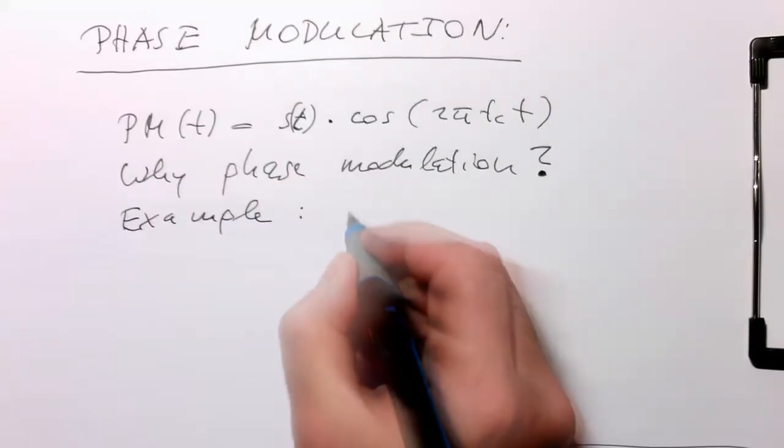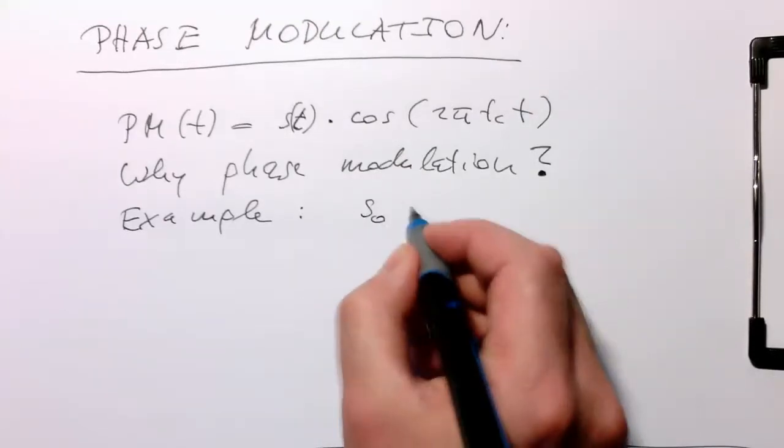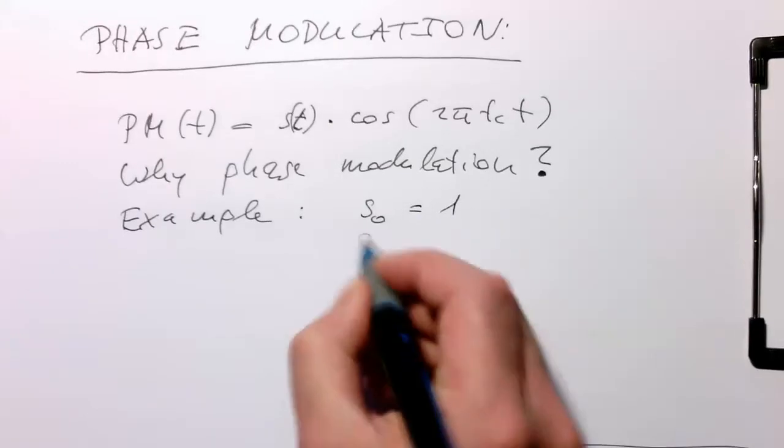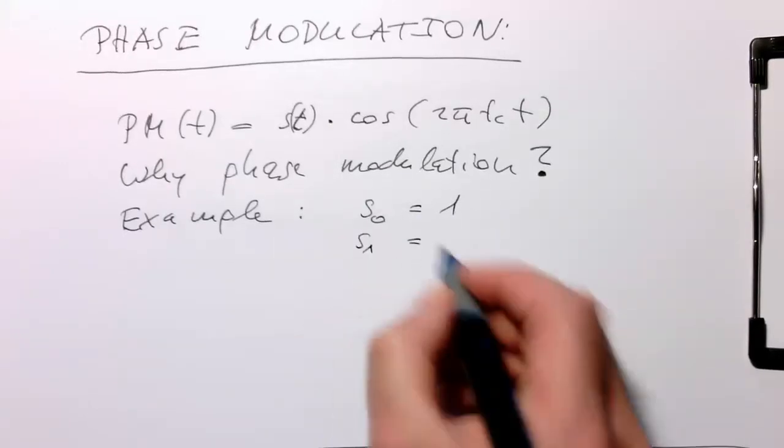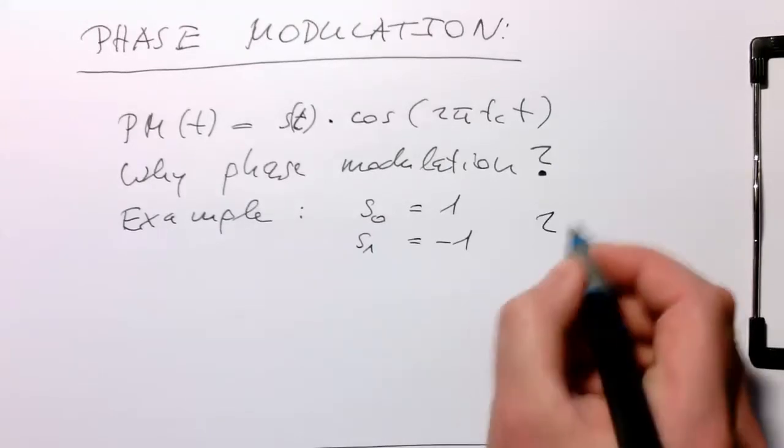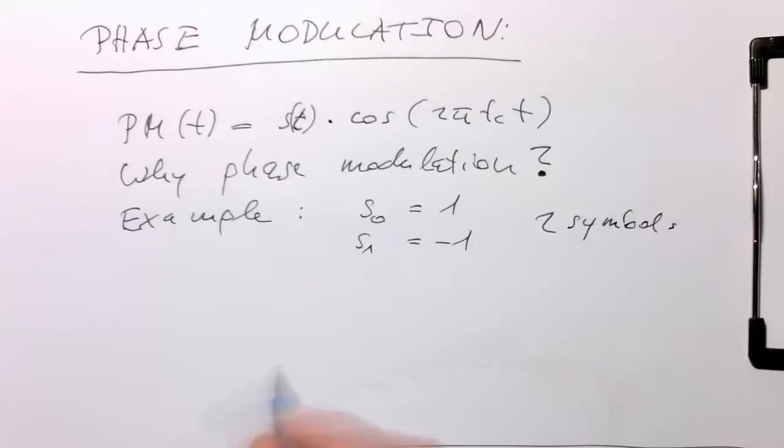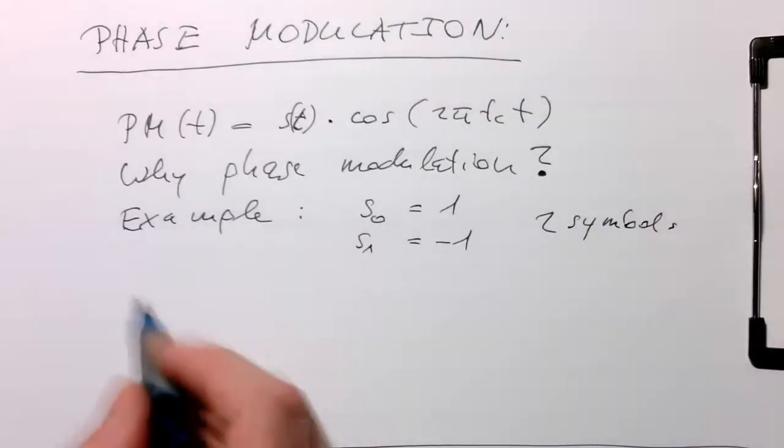We have, let's say, we've got two symbols. S0 and S0 is just 1 and S1 is minus 1.